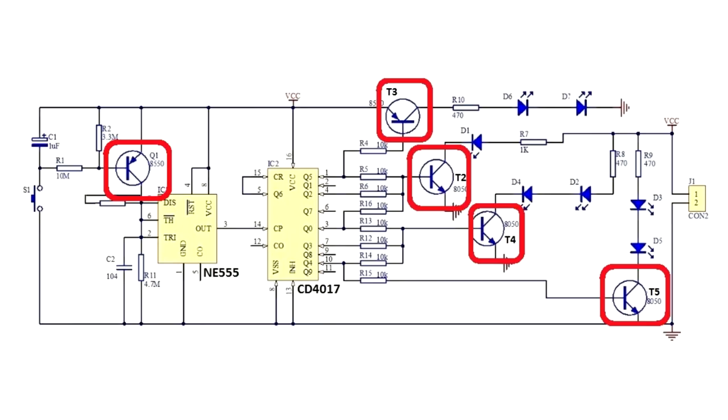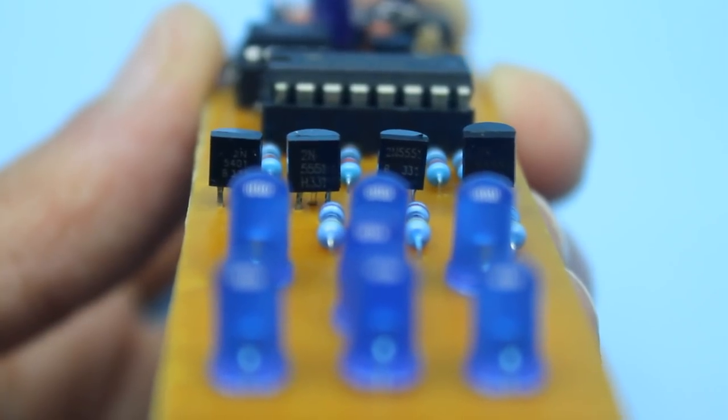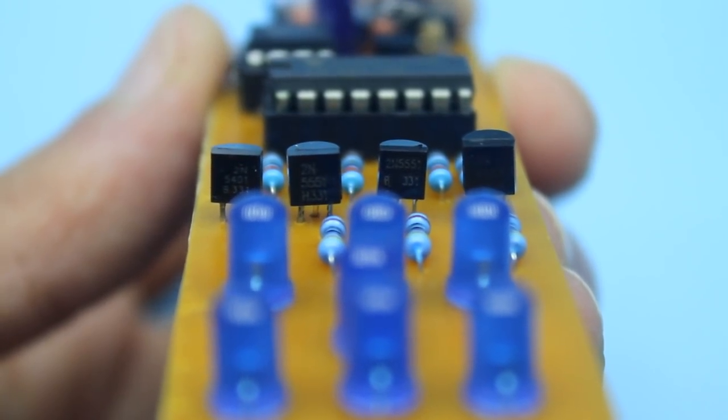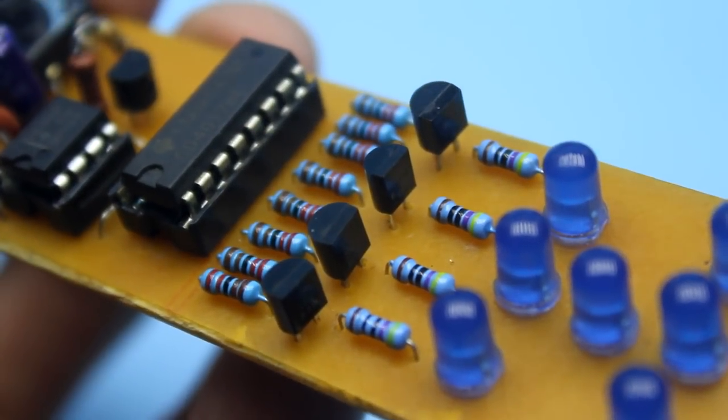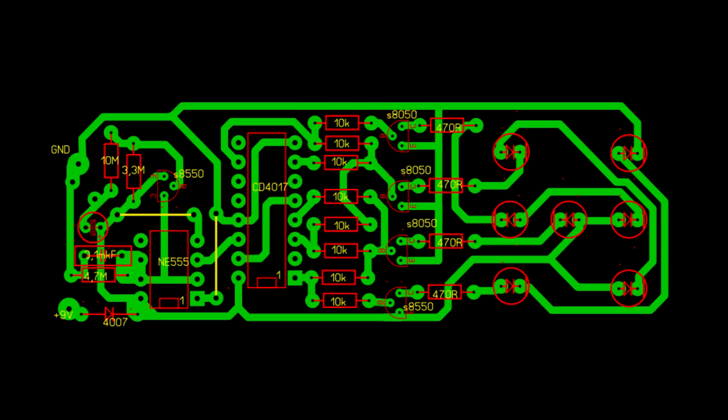The transistors used in the circuit can be replaced by others. Will work perfectly 2N5551 and 2N5401, and any other low power ones. Just before installation, pay attention to the pin layout. It may not be the same with those on the board.